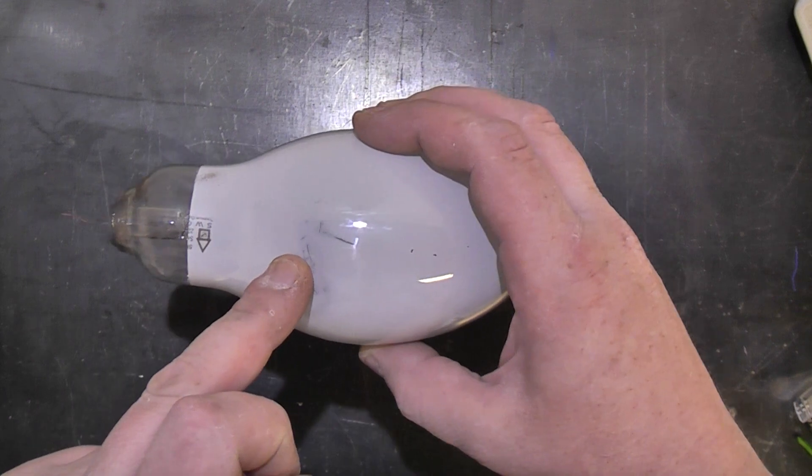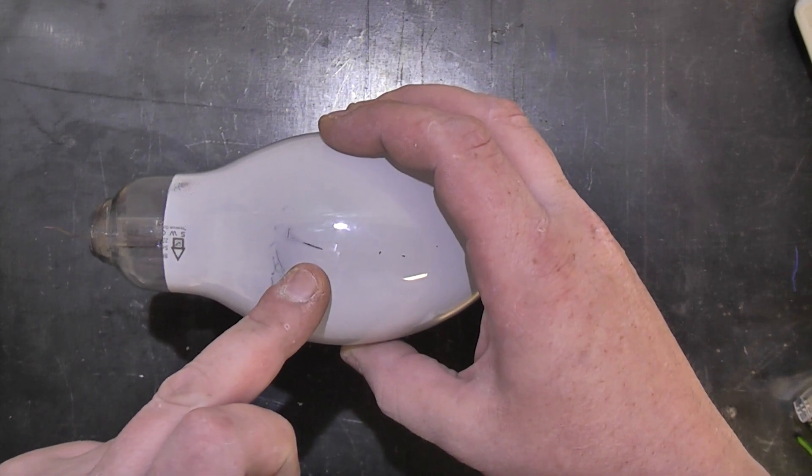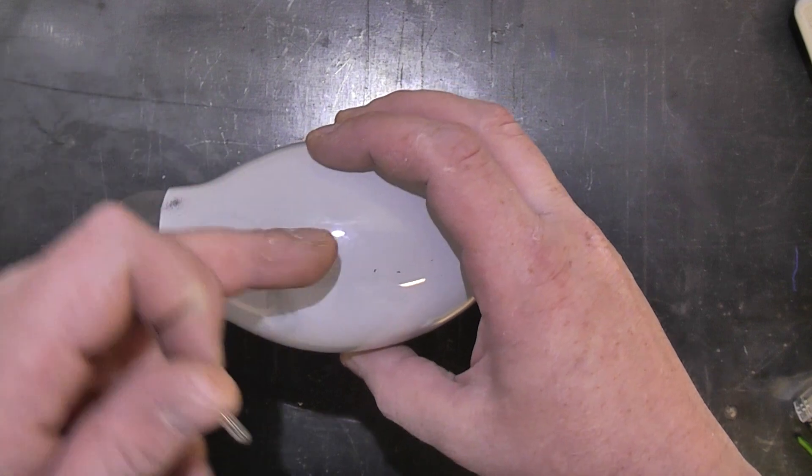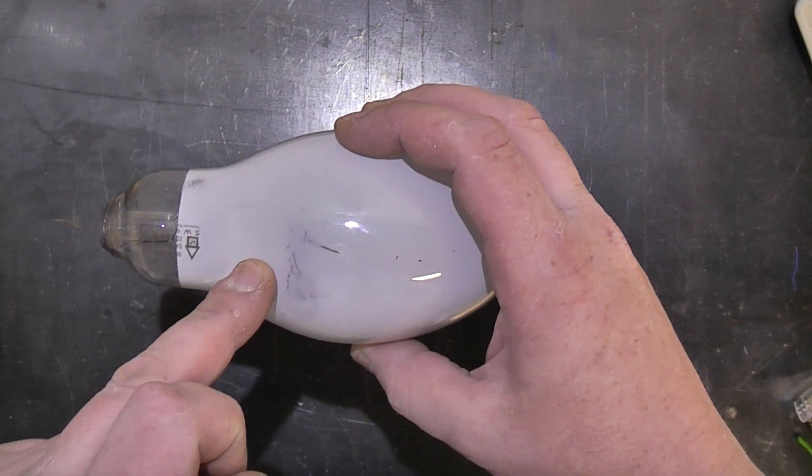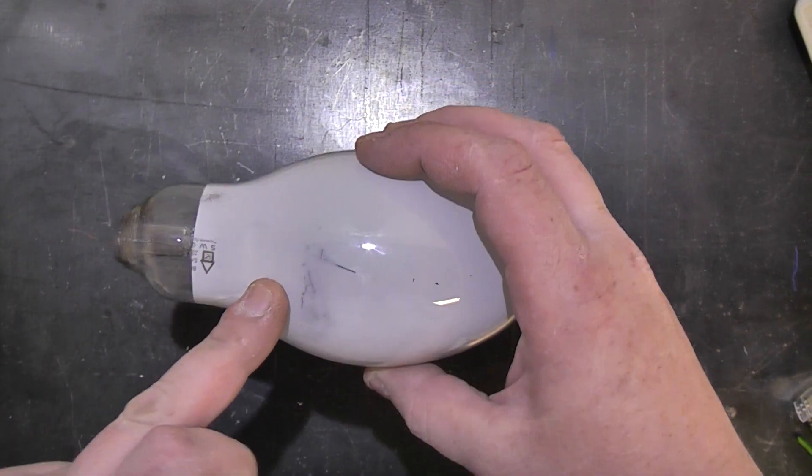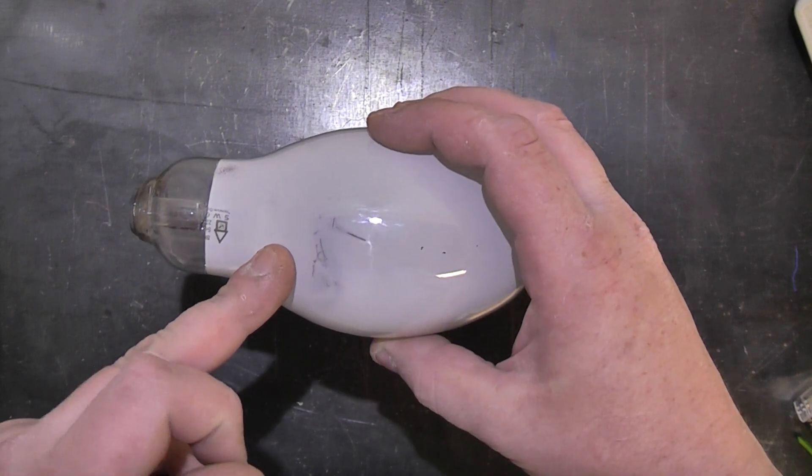Basically what it is is a small fused silica arc tube inside, full of low pressure argon and a small blob of mercury, and there's a normal incandescent filament in series with this so this can be put straight into a light fixture with no external ballast.